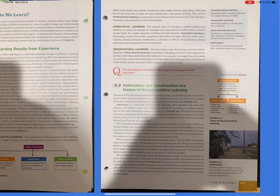Observational learning: the third major type of learning occurs by watching others. Observational learning is acquiring or changing a behavior after exposure to another individual performing that behavior. For example, you might learn the steps to a new type of dance by watching a YouTube video. By watching others in person or in the media, people may learn what to appreciate or what to fear.